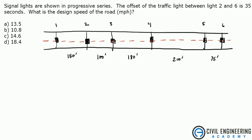Problem states signal lights are shown in progressive series. The offset of the traffic light between lights 2 and 6 is 35 seconds. What is the design speed of the road in miles per hour?